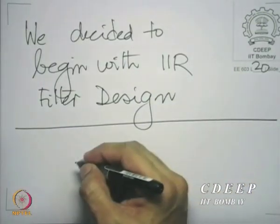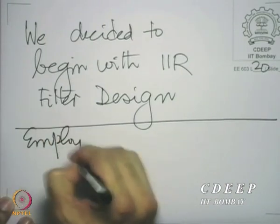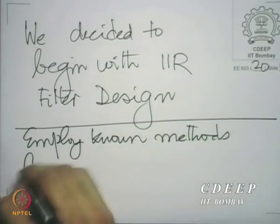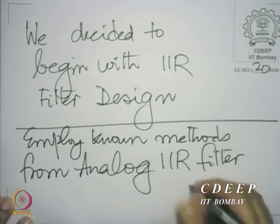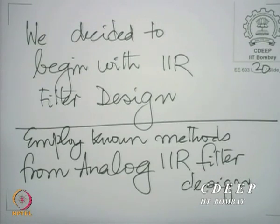We can take advantage of the methods available for analog filter design and use a universal process to convert from analog to discrete time — and that is a huge advantage in the design of IIR filters. So, for all these reasons, we agreed that we would begin with IIR filter design. The basic philosophy that we would follow is to employ known methods from analog IIR filter design. We also noted that when we consider analog filters, we have no choice — there is no non-trivial finite impulse response analog filter, and that is one of the reasons why we go to discrete time.